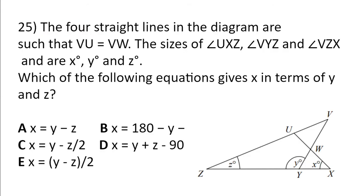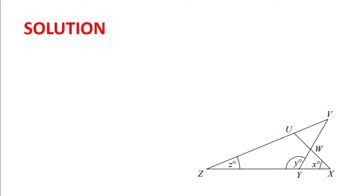Final problem of the paper. The four straight lines in the diagram are such that VU equals VW. The sizes of angle UXZ, VYZ, and VZX are X degrees, Y degrees, and Z degrees. Which of the following equations gives X in terms of Y and Z?